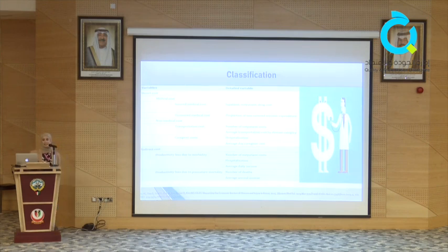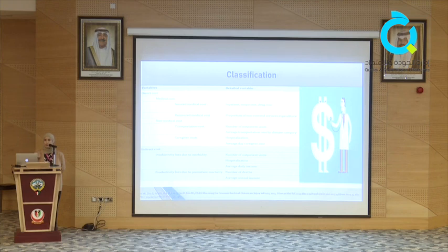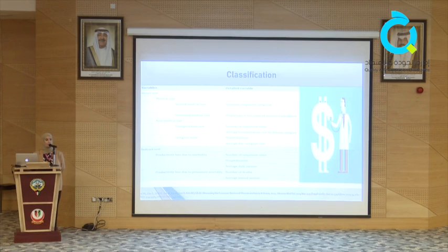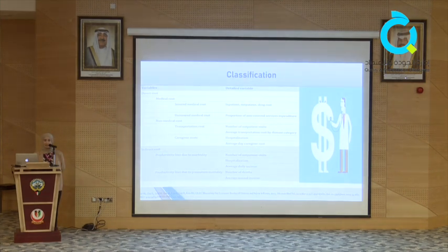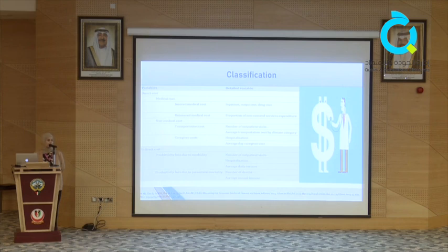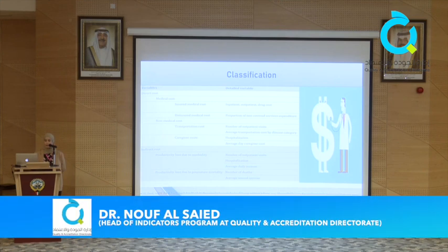Now I will talk briefly about the classification of the economic burden of VTE. The economic burden can be classified into direct costs and indirect costs. The direct cost is subclassified into medical costs — covered or not covered by insurance — and non-medical costs, which include transportation and healthcare workers needed to see and care for the patients. There are also indirect costs, which refer to the productivity loss due to disability and morbidity, and the productivity loss due to premature mortality.